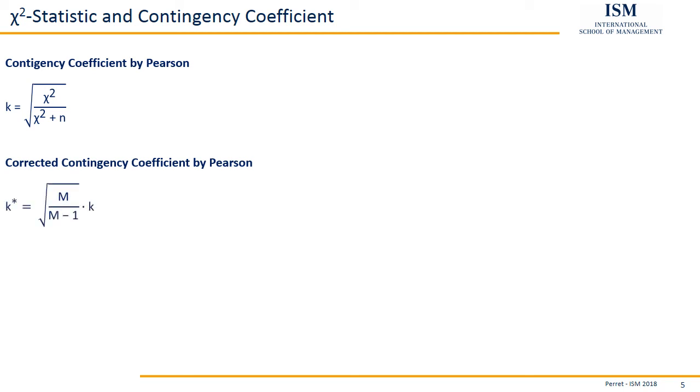This is done by switching to the corrected contingency coefficient by Pearson. This is by multiplying the contingency coefficient with this correction term of square root of m divided by m minus 1. M here being the minimum of i and j, whereas i is the number of rows and j is the number of columns. So we take a look which is the smallest of the two and then go m divided by m minus 1 square root and multiply this with the contingency coefficient.